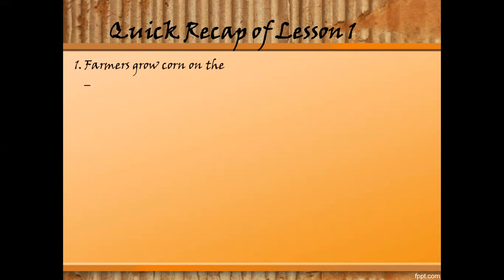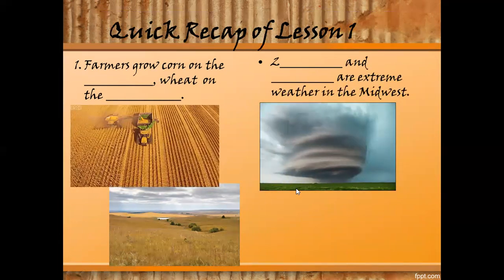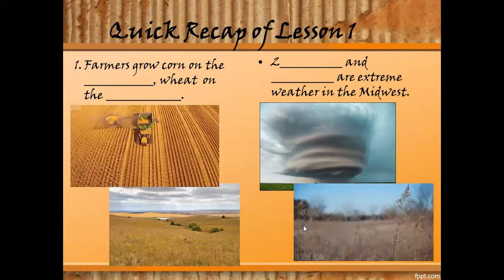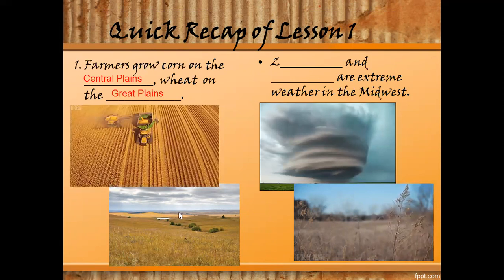We have two questions here. Number one: farmers grow corn on the blank and wheat on the blank — we're talking about kinds of plains, and there are pictures for you to have some clues. Number two: what are the two extreme weather types in the Midwest? The picture is very obvious. The answers: farmers grow corn in the central plains and wheat on the great plains. The central plains have more fertile, wetter soil, while the great plains have drier soil. And the two extreme weather types are tornadoes and droughts.